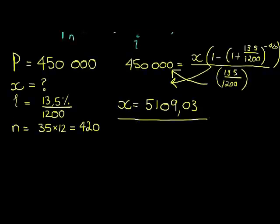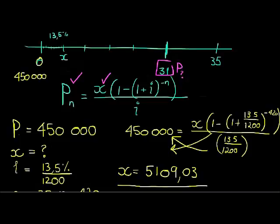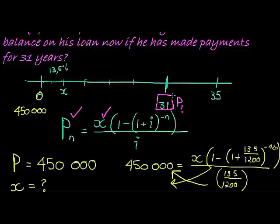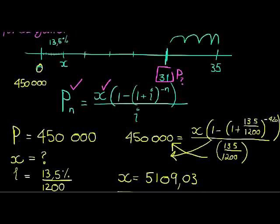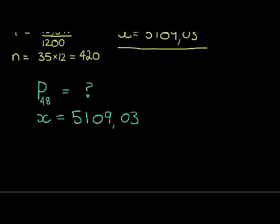There we go. Now that we have x, we can go reuse our formula, but this time we want to know what is the value after I've made already 31 years of payments. So there's still four years of payments left, and in every year I am making 12 payments, so there's still 48 payments left. So we are working out the present value if 48 payments are left. We don't know what that value is, but we know what our recurring payment is. This time we are still paying the same amount. This is a constant amount.